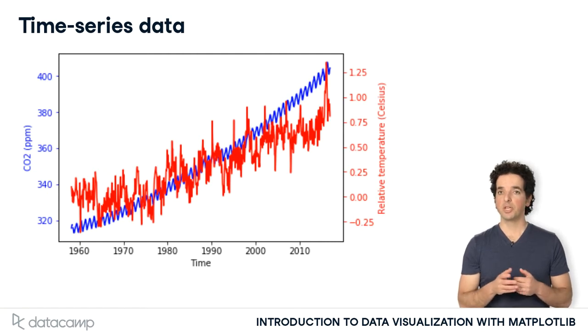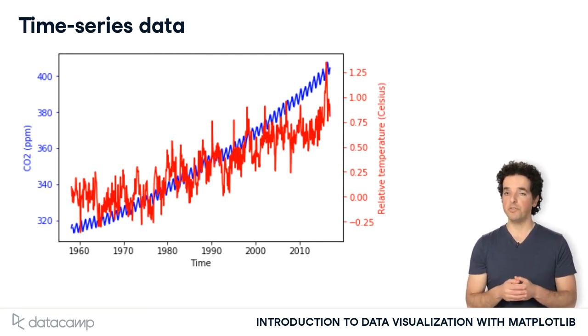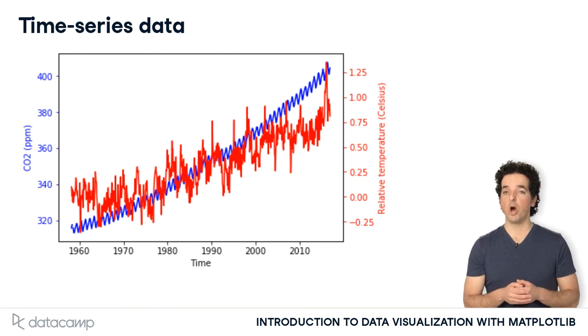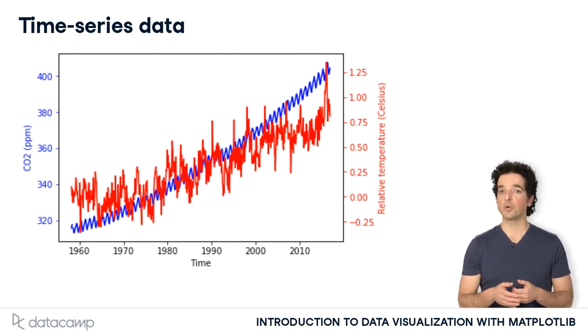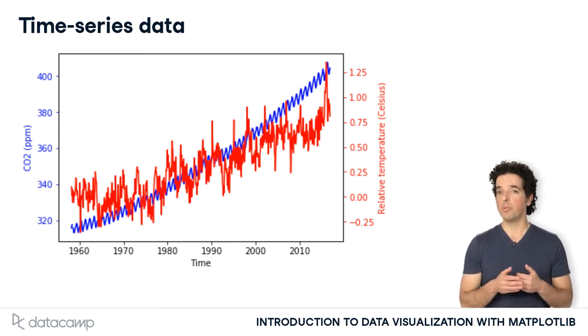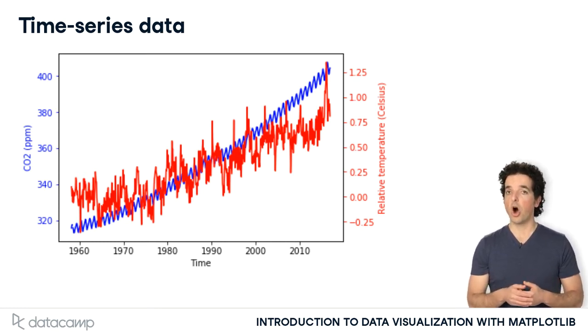For example, consider the data that we saw in previous videos in this chapter. This data shows the levels of measured carbon dioxide in the atmosphere over a period of more than 50 years in blue, and the relative temperature over the same period of time in red. That's a lot of data, and when presenting it, you might want to focus attention on a particular aspect of this data.